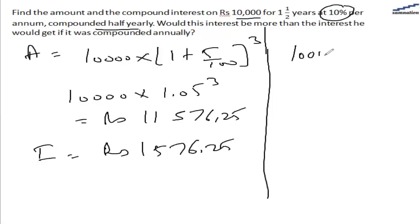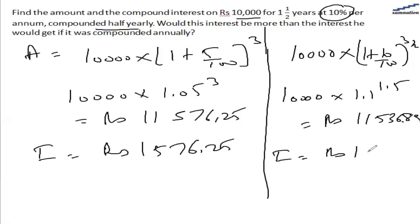Then the amount would have been 10,000 multiplied by 1 plus 10%, and this is 3 by 2, so it is 10,000 multiplied by 1.1 to the power 1.5. This will be rupees 11,536.89. So the interest will be rupees 1,536.89.